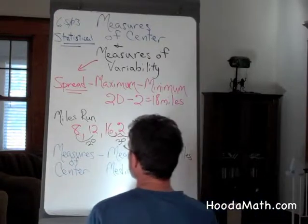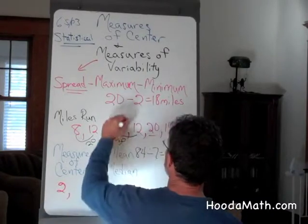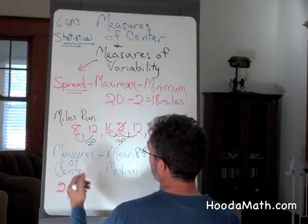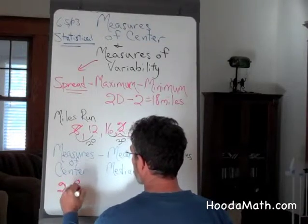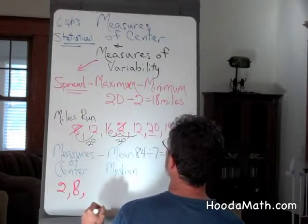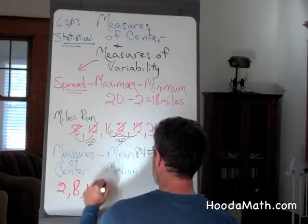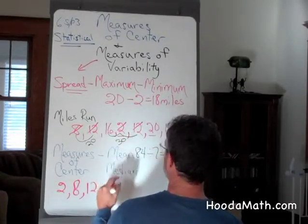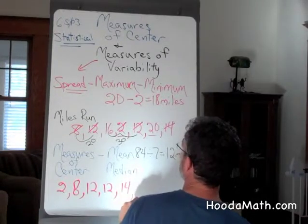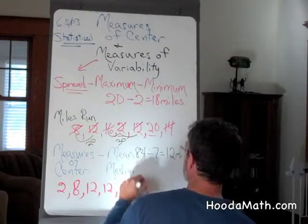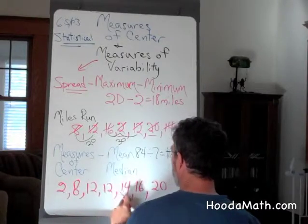For the median, we have to put the numbers in order. We said her minimum was 2. The next lowest distance she ran would be 8. And then she ran 12 twice — 12 and 12. Then she ran 14 miles. Then she ran 16, which was the next highest. And then 20 was the farthest. We should have 7 numbers: 1, 2, 3, 4, 5, 6, 7.